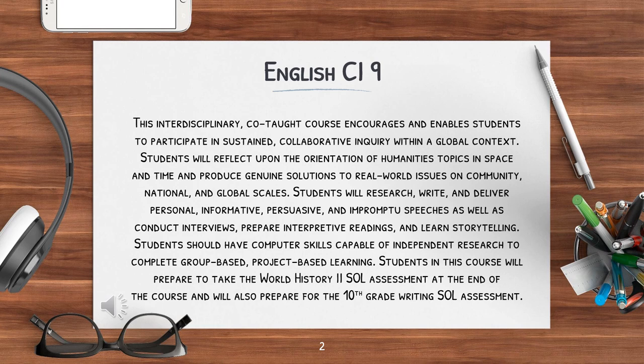English Commonwealth Innovation 9: This interdisciplinary co-taught course encourages and enables students to participate in sustained collaborative inquiry within a global context. Students will reflect upon the orientation of humanities topics in space and time and produce genuine solutions to real-world issues on community, national, and global scales.